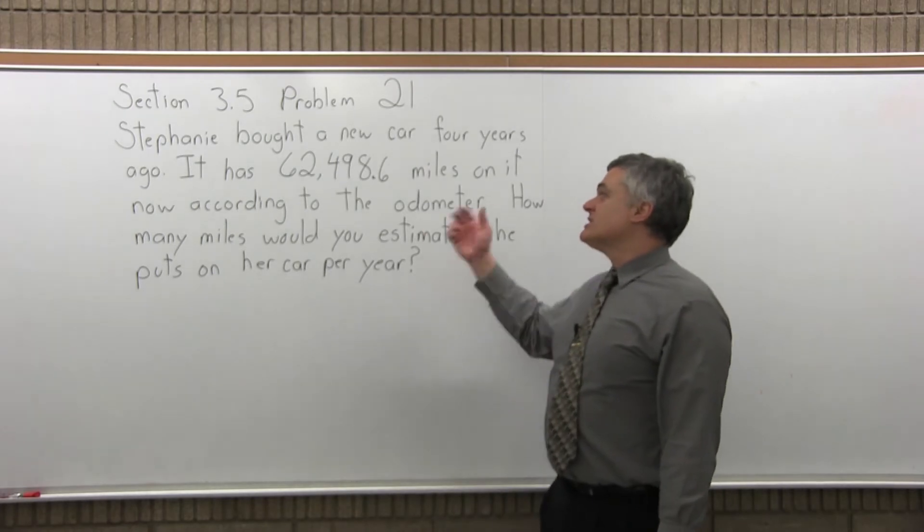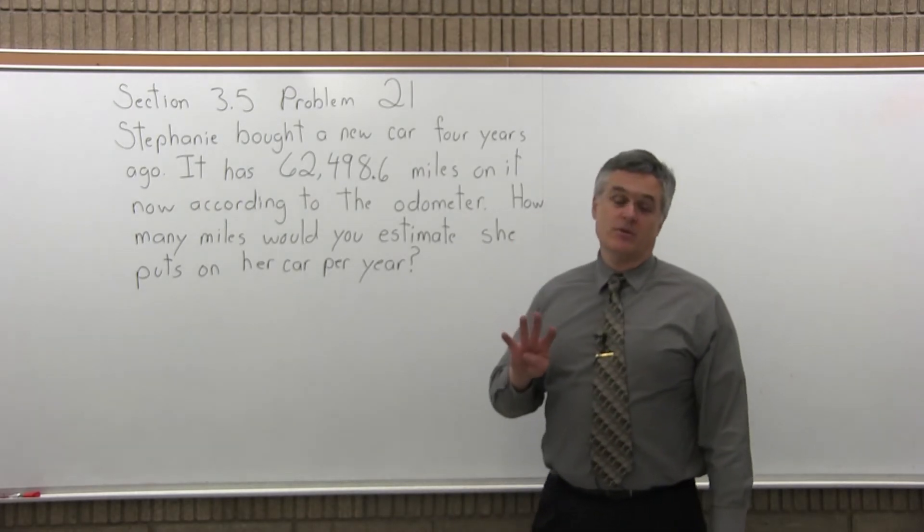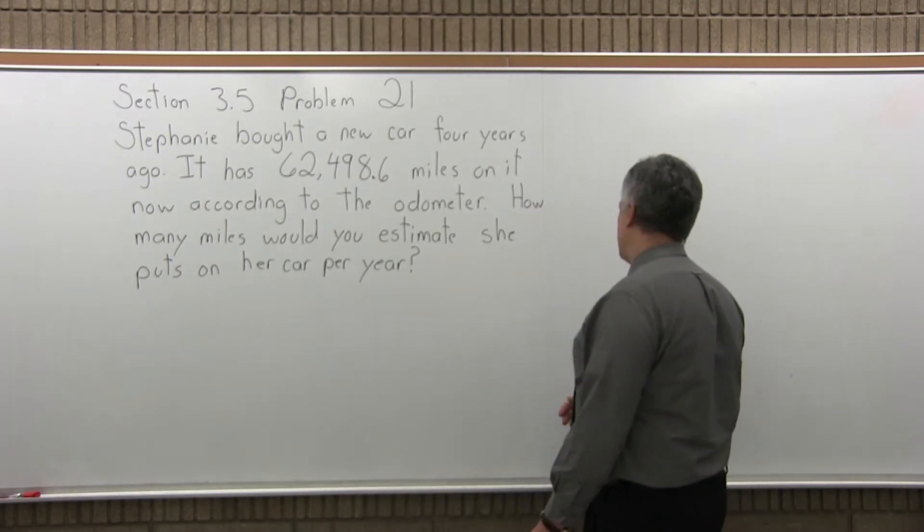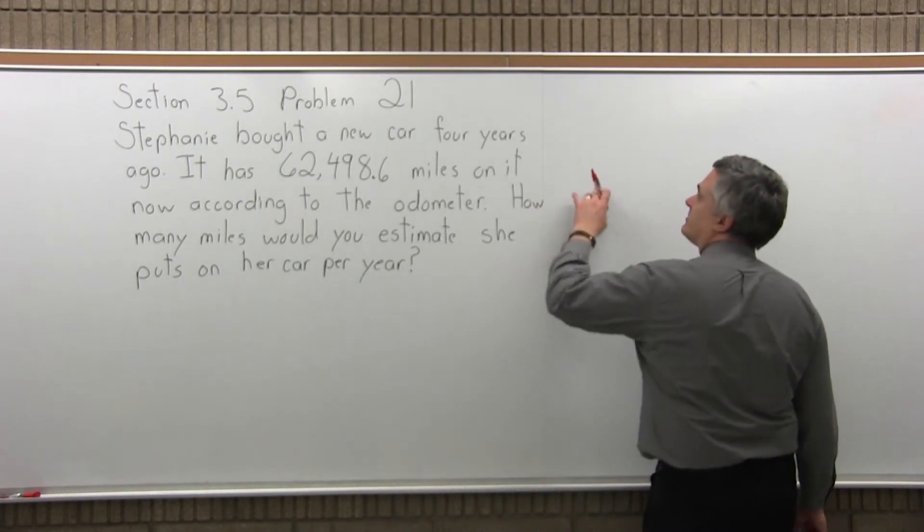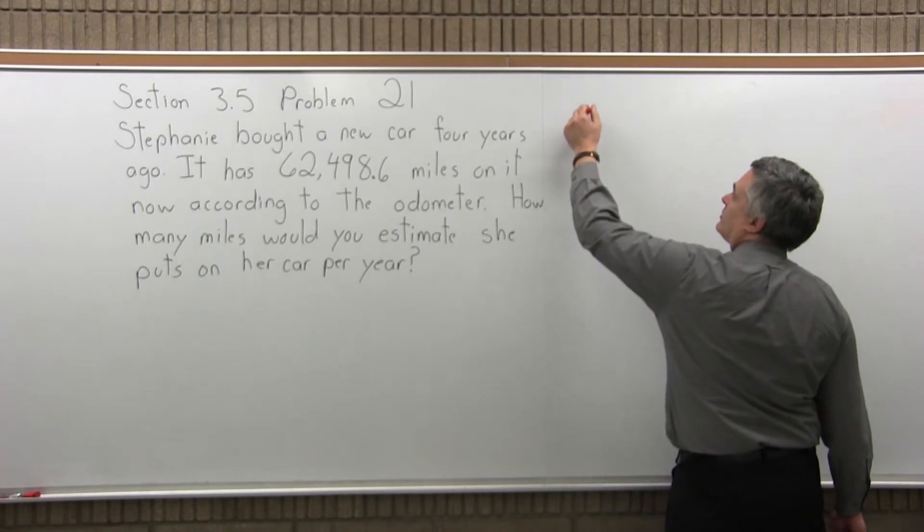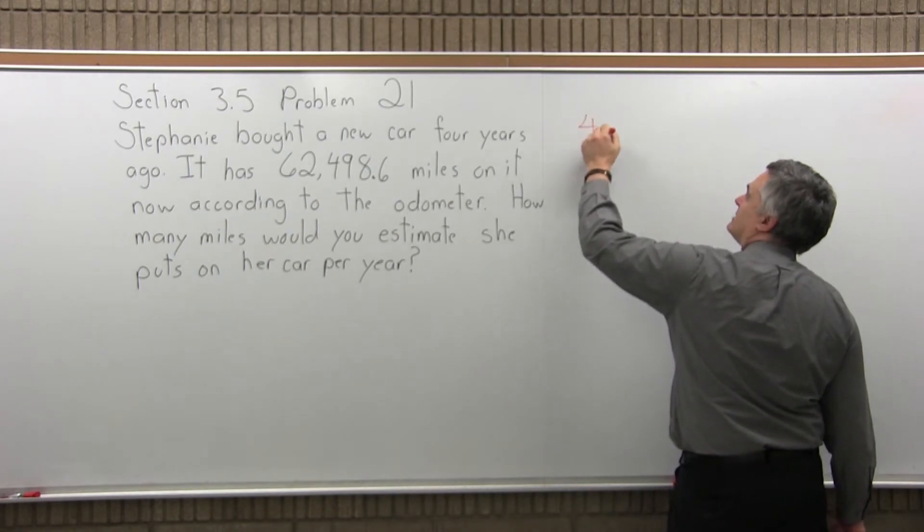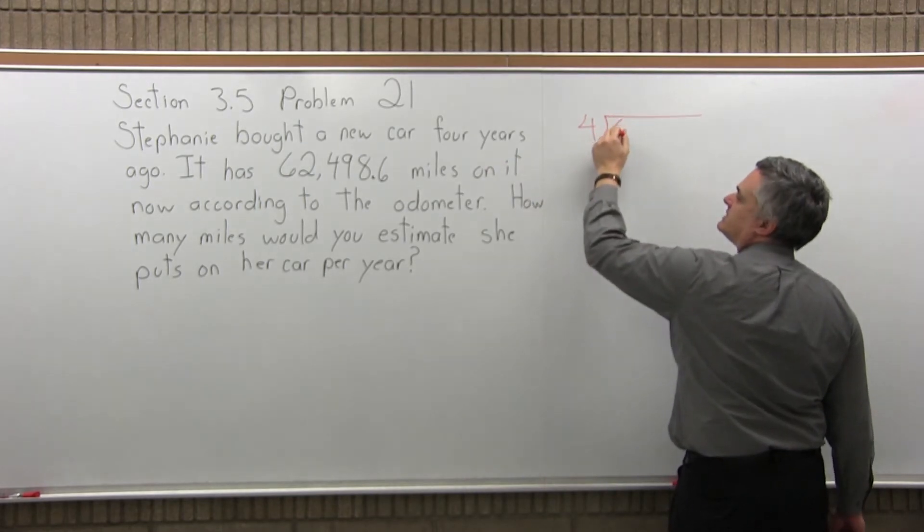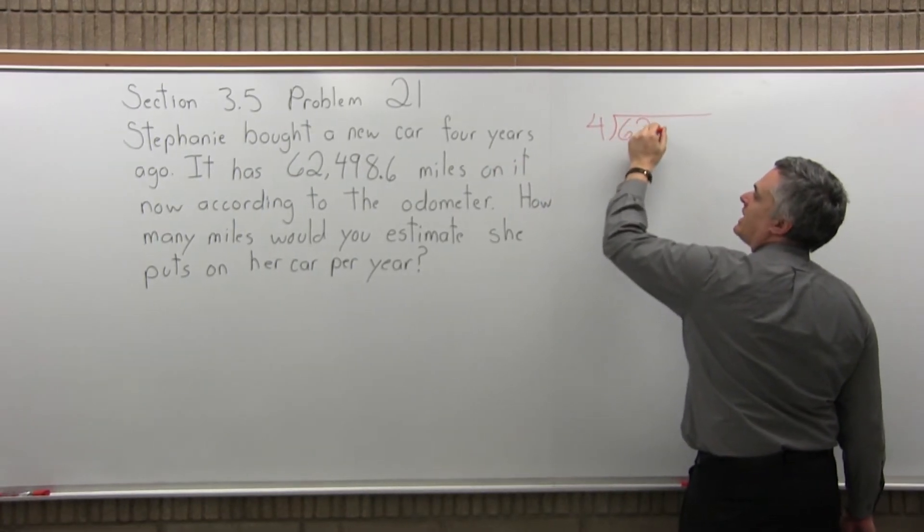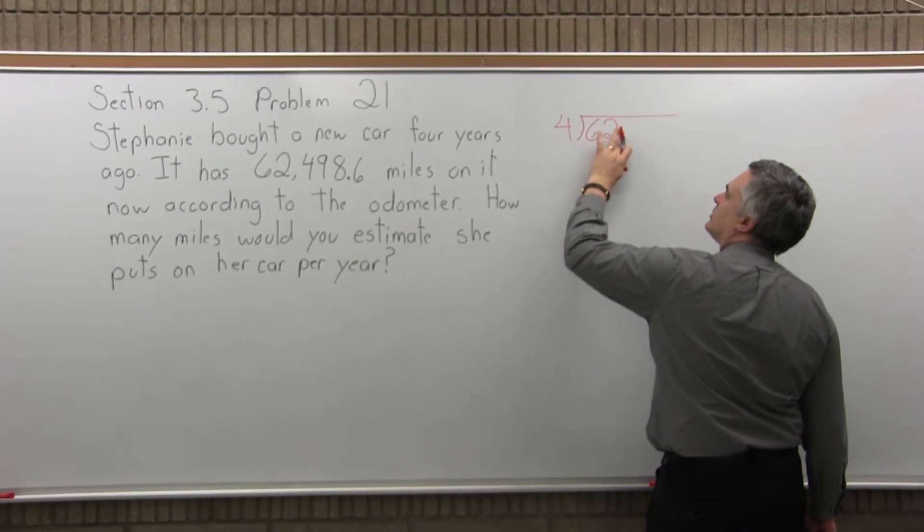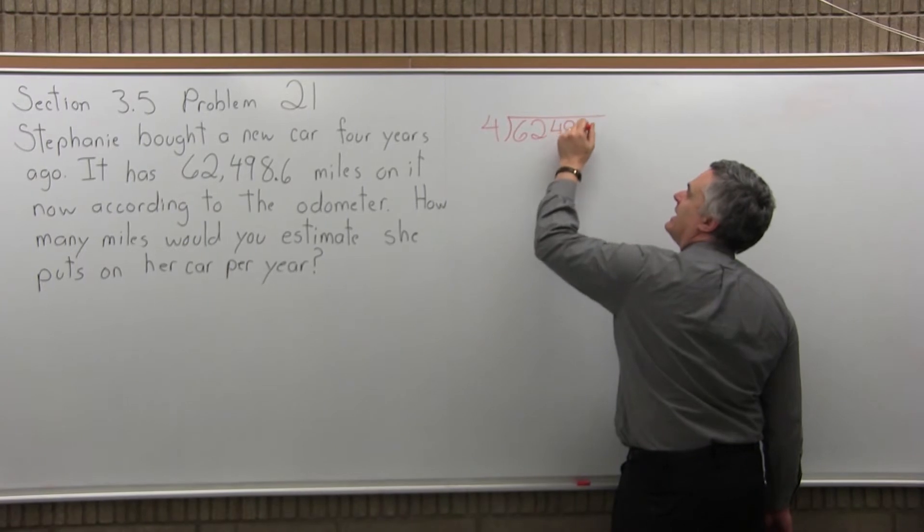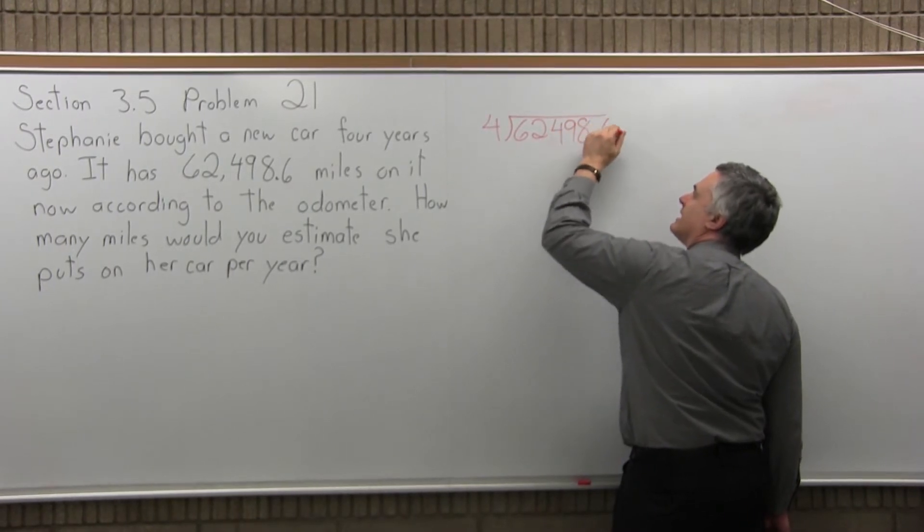So, if she has a little over 62,000 over a four year period, you want to divide by four. And it will estimate pretty well for you how many miles she puts on per year. So, you can just come to the side a little bit and I will do four divides into the number of miles, which is 62,000, well, let's not put the comma in it. It might have made it a little confusing, 498.6.